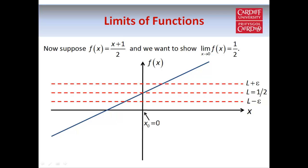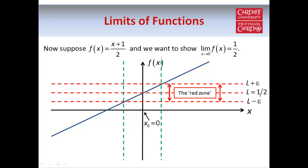Here are the two red lines, L minus epsilon and L plus epsilon, if we think of epsilon as being a fixed small number. You can see that if x is between these two green lines, then the function is inside the red zone. But we want to work out exactly how close x needs to be to 0 in order for the function to be inside the red zone.